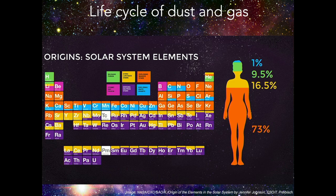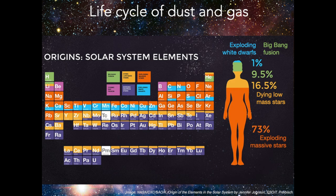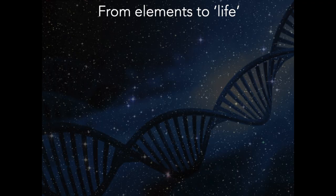We are 1% by mass from exploding white dwarfs, 9.5% from light elements like hydrogen and helium, 16.5% from dying low-mass stars like the Sun, and the vast majority — 73% — from exploding massive stars. Those massive stars are critical for key elements like carbon, nitrogen, oxygen, phosphorus, and sulfur, which are the building blocks of life.